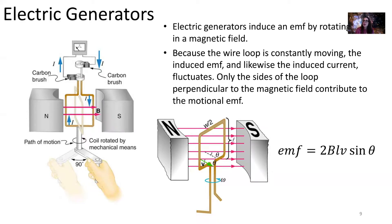Electric generators induce an EMF by rotating a coil of wire in a magnetic field. Here we have a fixed magnetic field from magnets. We've got our conducting loop in here, and it's being rotated by a person or by some other mechanical means, and then that rotation generates an EMF.